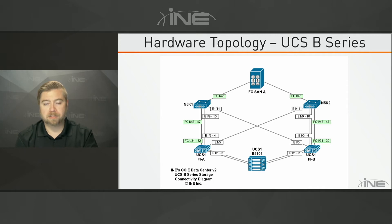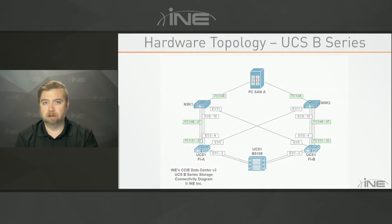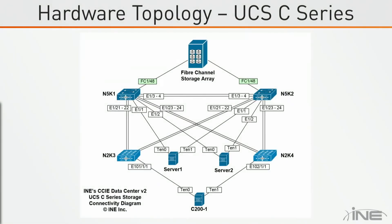The second portion of the topology is going to be the standalone C series rack mount servers, which are going to be connected to fabric interconnects. In our case we have Gen 2 fabric interconnects — the 2200 series — that are then dual-homed to the Nexus 5000 switches.